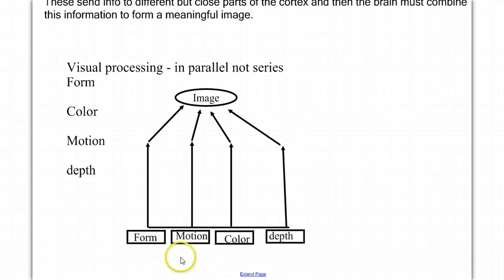It's not that we process form, and then motion, and then color, and then depth. We process depth, color, motion, form, and we do it in parallel rather than series. And then we combine those to create the image.